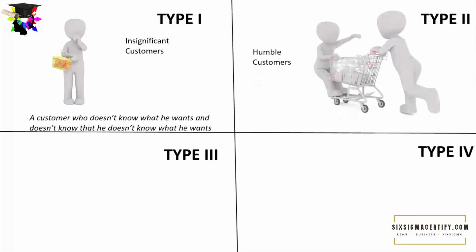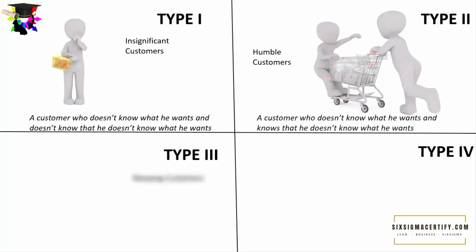The second type of customers are the humble customers. Type 2 or the humble customers is the customer who doesn't know what he wants but knows that he doesn't know what he wants. He is aware of his own lack of knowledge. These types of customers are called Type 2 customers.